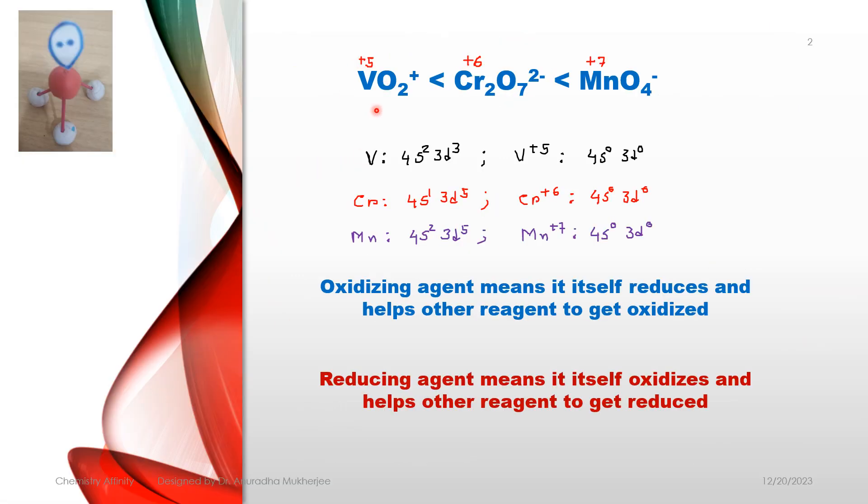Here vanadium has plus 5 oxidation state, Cr2O7^2- chromium is in plus 6, and MnO4- manganese is plus 7 oxidation state. They all are in the highest oxidation state and their electronic configuration is 4S0, 3D0.